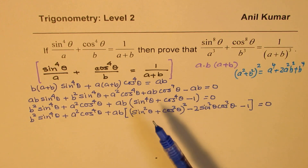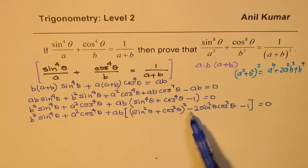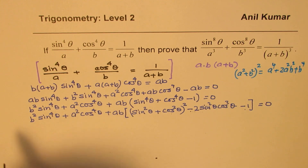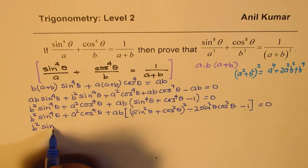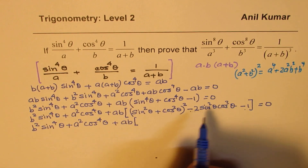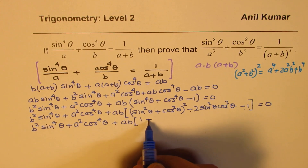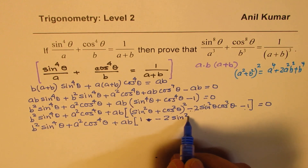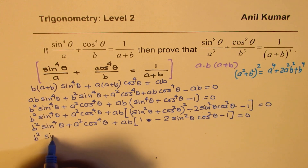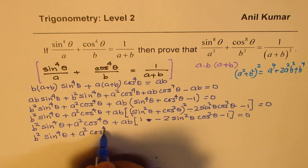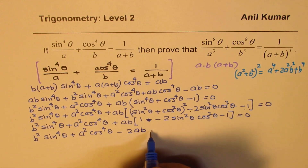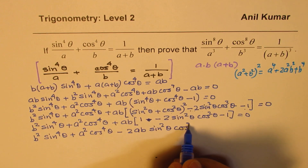So that is what we have done — we utilized the algebraic identity. Now, sine squared theta plus cos squared theta is just 1, and 1 minus 1 is 0. So we are left with minus 2·sin²θ·cos²θ. So we rewrite this as b²·sin⁴θ + a²·cos⁴θ + ab·(1 minus 2·sin²θ·cos²θ minus 1) equals to 0, leaving us with b²·sin⁴θ + a²·cos⁴θ minus 2ab·sin²θ·cos²θ equals to 0.